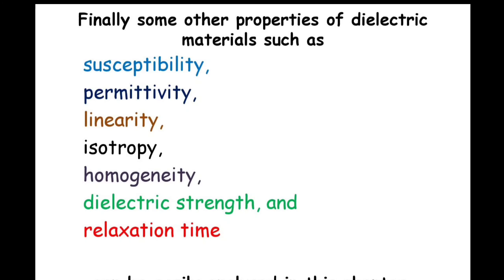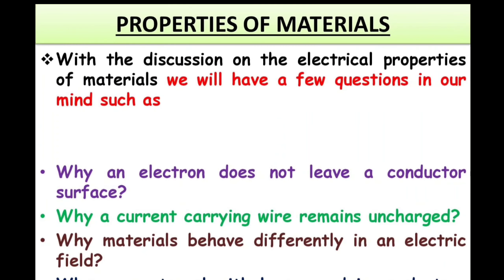My intention here is to say we are going to analyze electrostatics in material space. Therefore, in order to analyze that electrostatic behavior, we need to have fundamental understanding of materials. While analyzing the fundamentals of these materials, the different parameters essentially required to understand are: susceptibility, permittivity, linearity, isotropy, homogeneity, dielectric strength, and relaxation time.